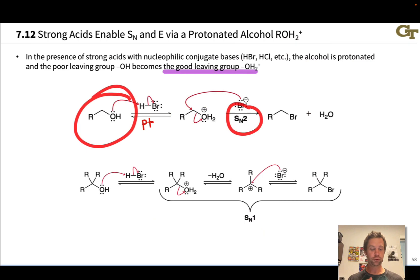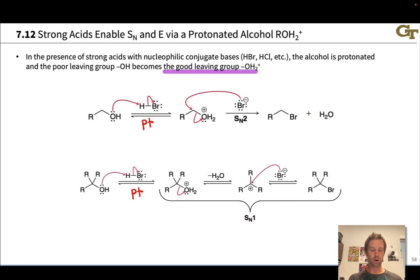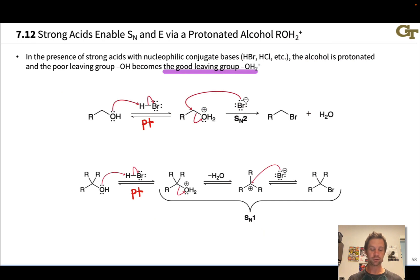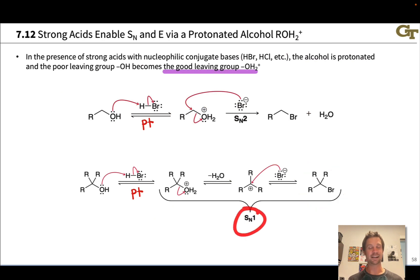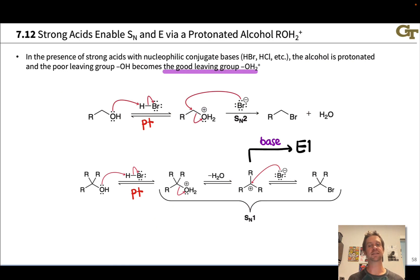SN2 is enabled via protonation of the alcohol oxygen when the alcohol is primary. For a tertiary alcohol, we can protonate again and lose water to get a relatively stable carbocation — loss of a leaving group gives SN1-type reactivity, and bromide can come in and attack that carbocation to give the tertiary alkyl bromide via SN1. And of course if the conjugate base of the acid is a decent base, or if the temperature is elevated, we might see E1 elimination.